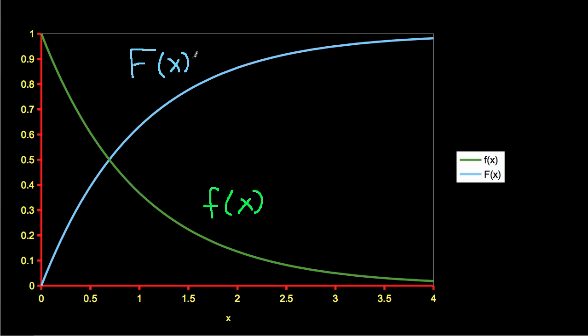So if you look at these, hopefully you can see that the density function is the slope of the cumulative distribution function. If I look at the cumulative distribution function down here, it has a fairly steep slope, and that's represented by a larger value up here. If I go out here, the cumulative distribution function has a fairly small slope, and that's represented by a small value of the probability density function.